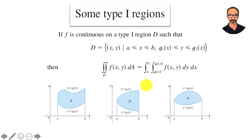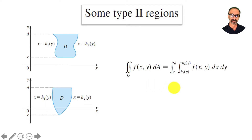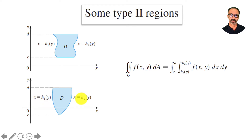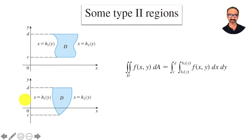Type two: you go with x first. When you go with x, you have a curve below you and a curve above you, so x will be h1 of y and h2 of y — both functions of y. After the inner integral, everything is in terms of y, and the outer y limits are constants from c to d.